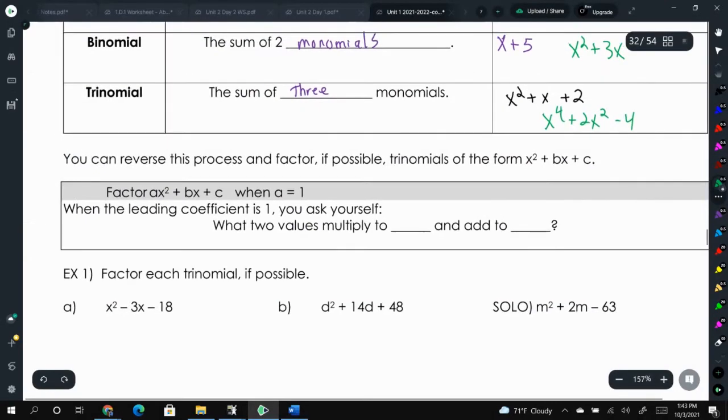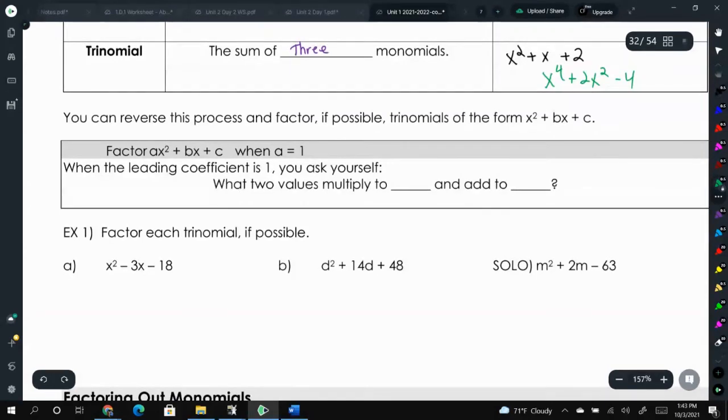Going back to that idea of taking our standard form quadratics, which we could call them as trinomials, we wanted to factor them, and when we factor them, we're going to create two binomials. Because remember, in intercept form, we have two sets of parentheses. Intercept form is x minus p, x minus q. Those are two binomials.